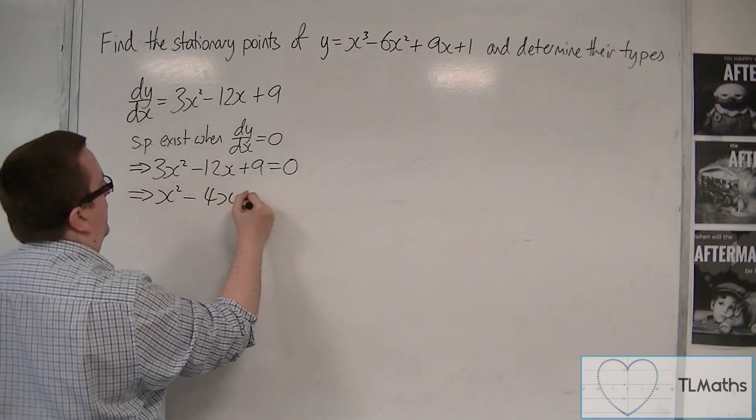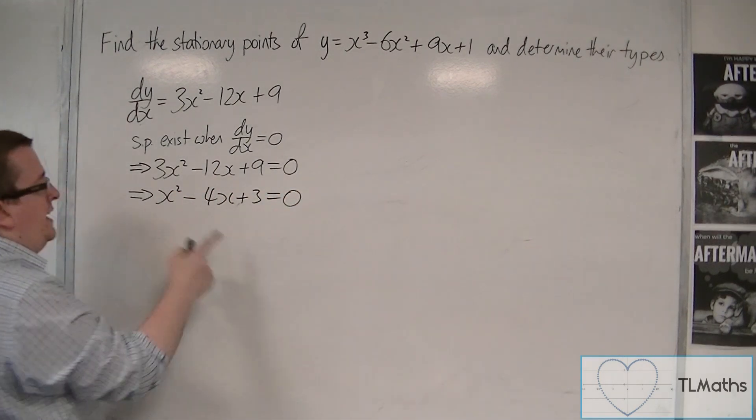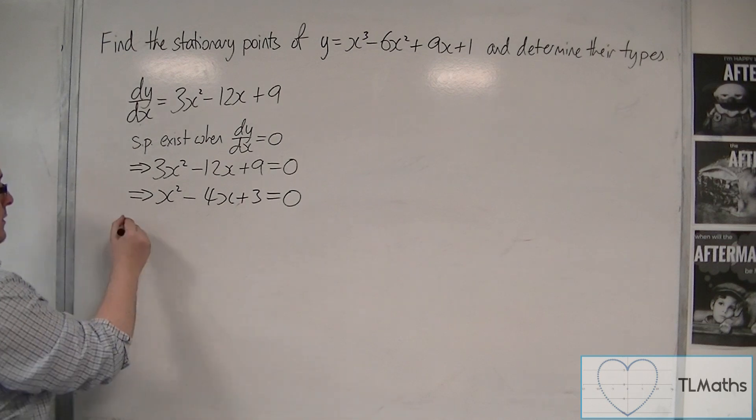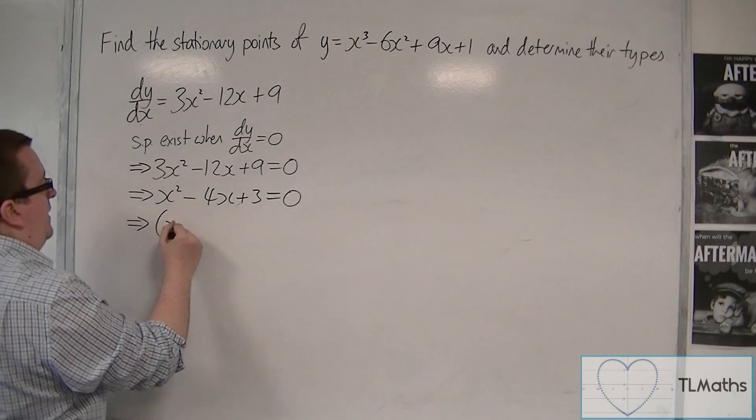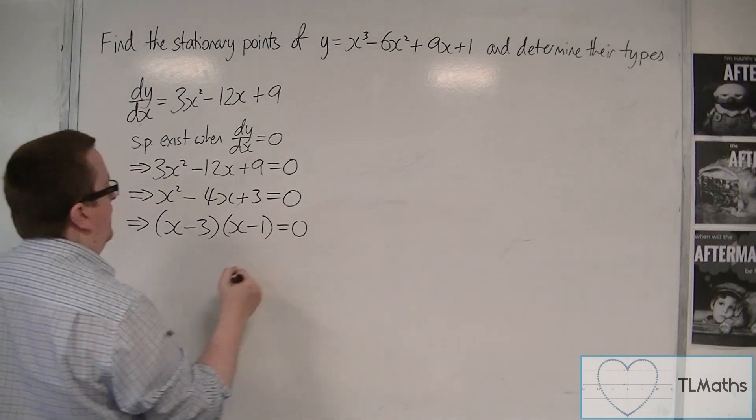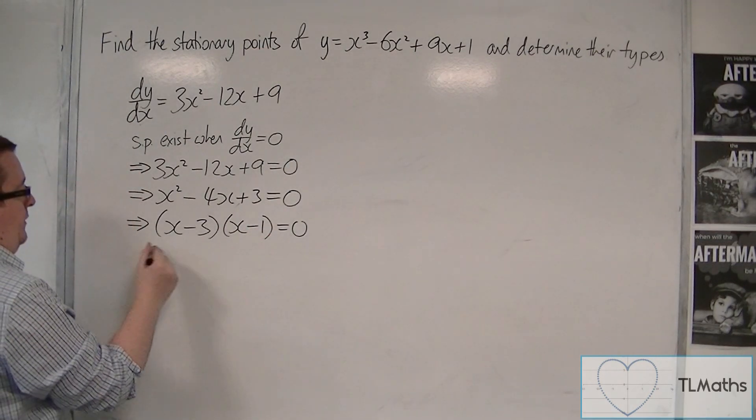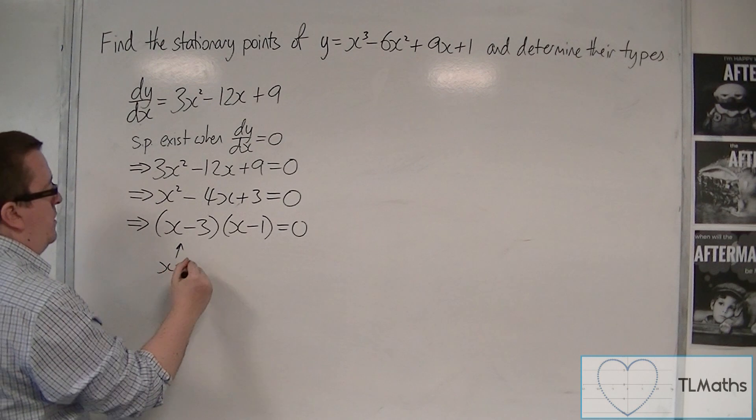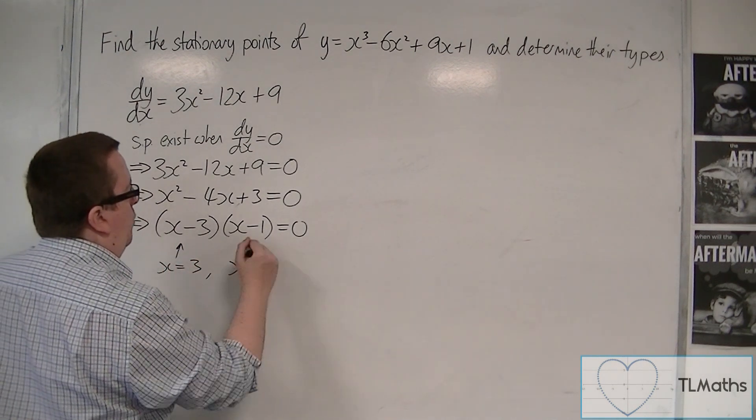That gives us a quadratic that factorises. So we would have (x - 3)(x - 1). So the stationary points are x = 3 and x = 1.